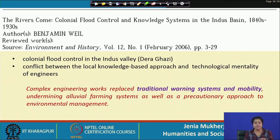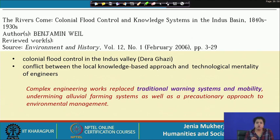People understood that once the flood waters receded, the field would be left with silt that would be very important for the production process. But the colonizers, with their technological superiority and chauvinism, wanted to build big embankments on the Indus river so that floods could be totally controlled and regulated. Complex engineering works replaced the traditional warning system and mobility, undermining alluvial farming systems as well as a precautionary approach to environmental management. Benjamin Will's article is unique in that he talks not only about how flood was perceived as a curse during the colonial period, but also how a cost-effective traditional warning system was totally replaced when the British came up with their hydraulic interventionist mechanisms.